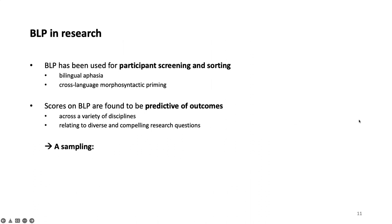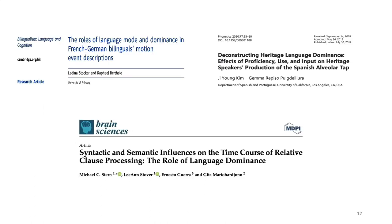To set us up for what we're talking about in terms of open scholarship: the BLP has been used in participant screening and sorting in areas such as bilingual aphasia and cross-linguistic morphosyntactic priming. BLP scores have been found to be predictive of outcomes across a variety of fields and disciplines and domains of research, relating to diverse and compelling research questions. Here is a sample of articles illustrating the diversity of application of the BLP, with titles from journals ranging from bilingualism to phonetics to brain sciences.